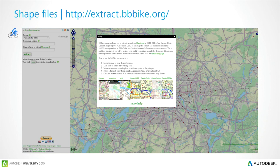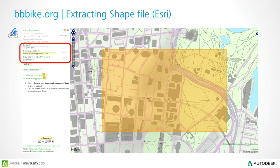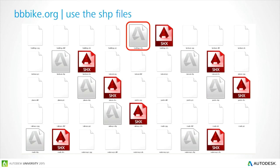Another great site to pull data from is BBBike — a cycling website with a huge amount of data you can download for free. From the BBBike website, extract the Esri shape files. For your site extents — in this case Barangaroo — you can bring down building footprints, land use data, roads, underground data, and it all comes down as shapefiles which you can bring into Civil 3D and InfoWorks 360. The key file type to look for is the SHP file.